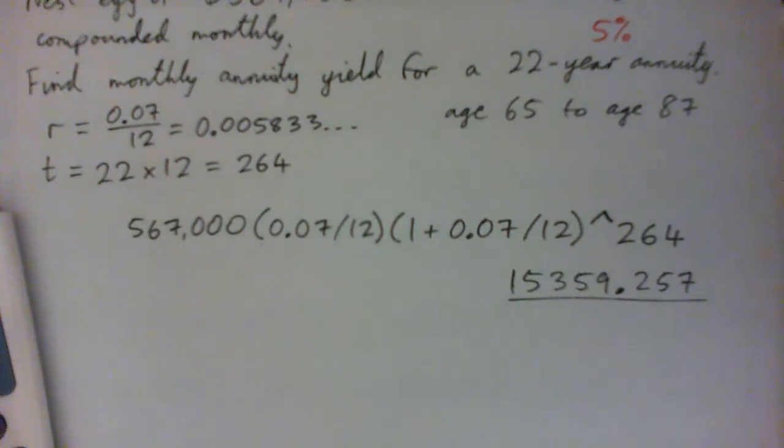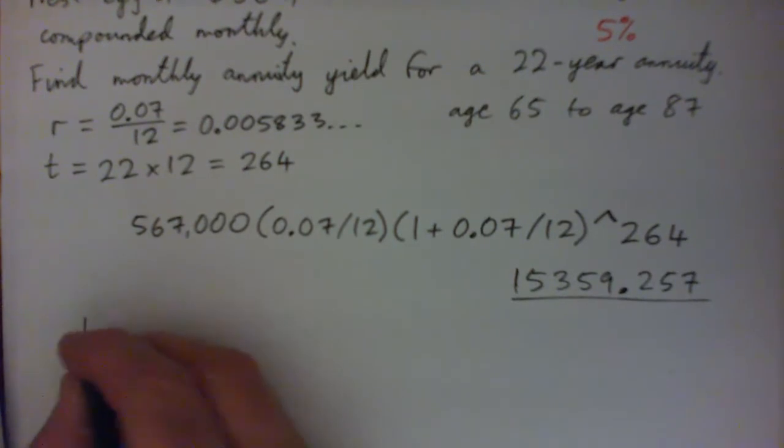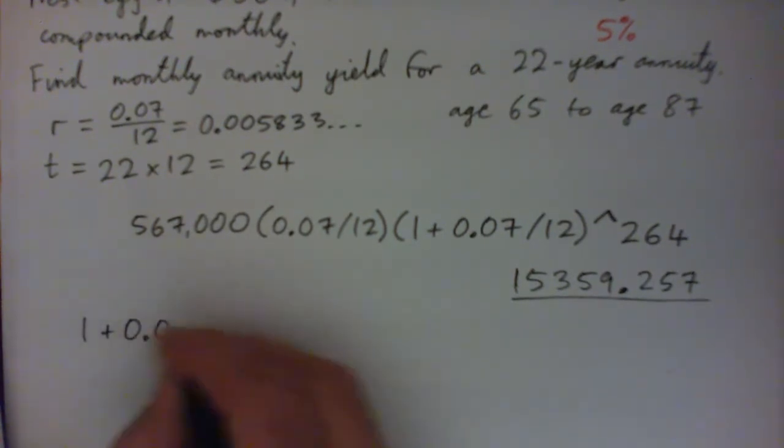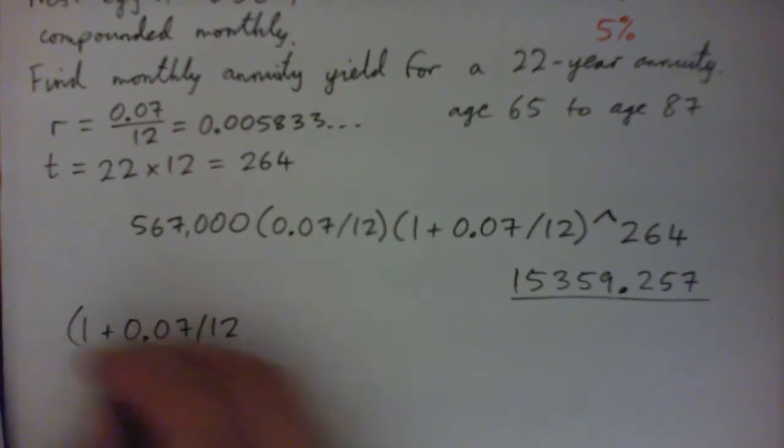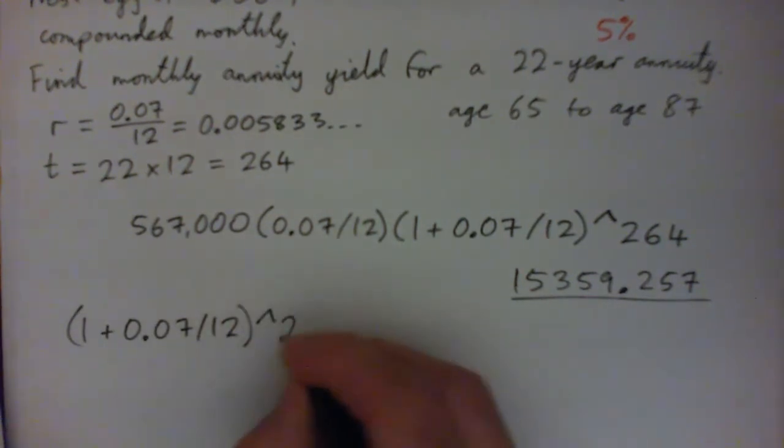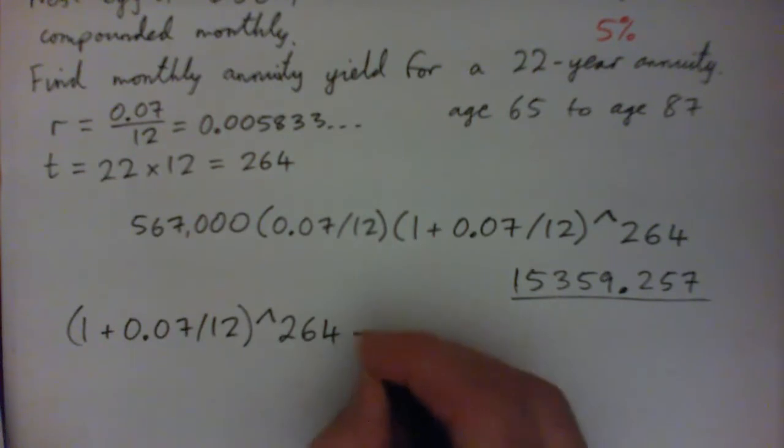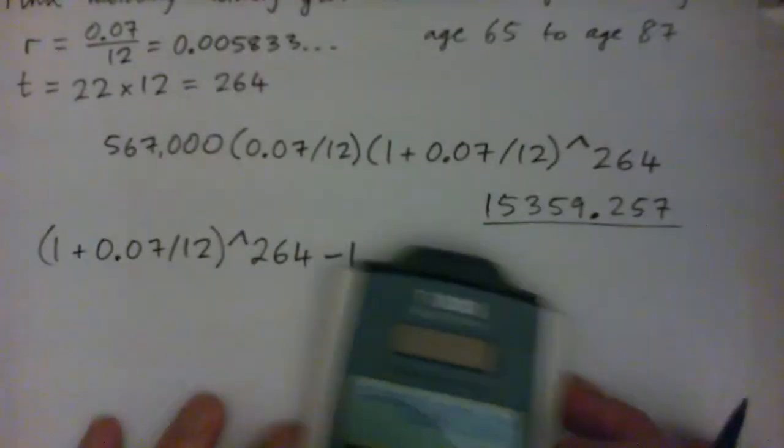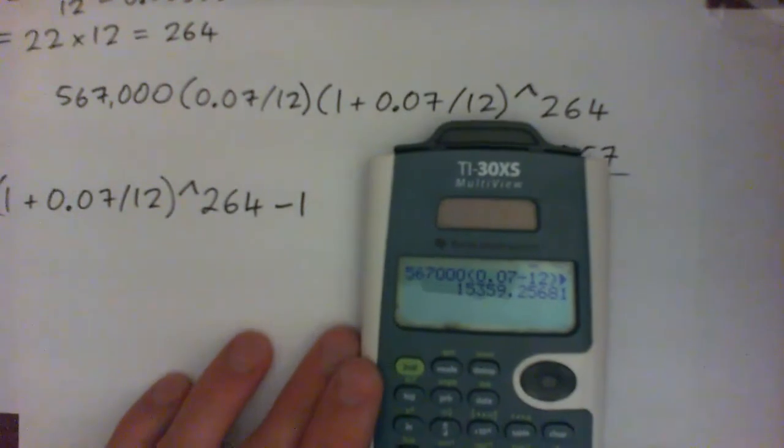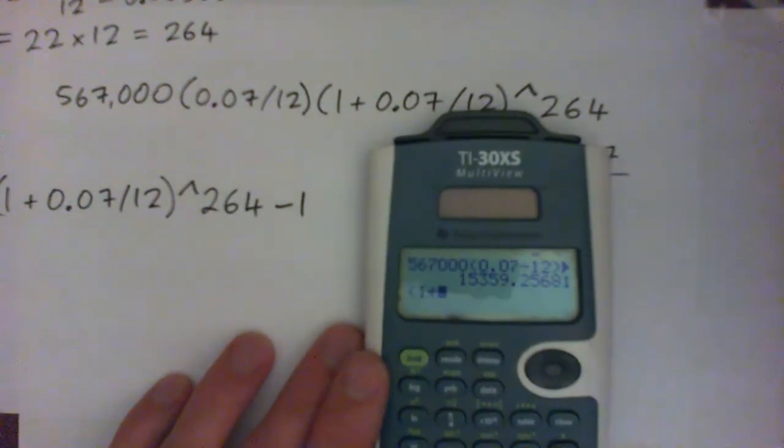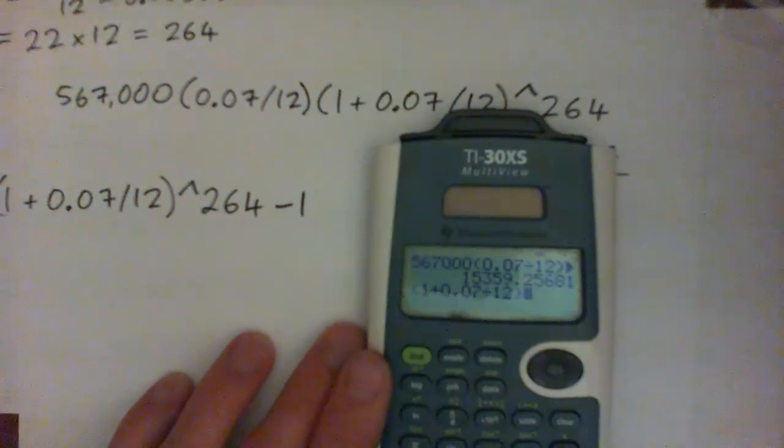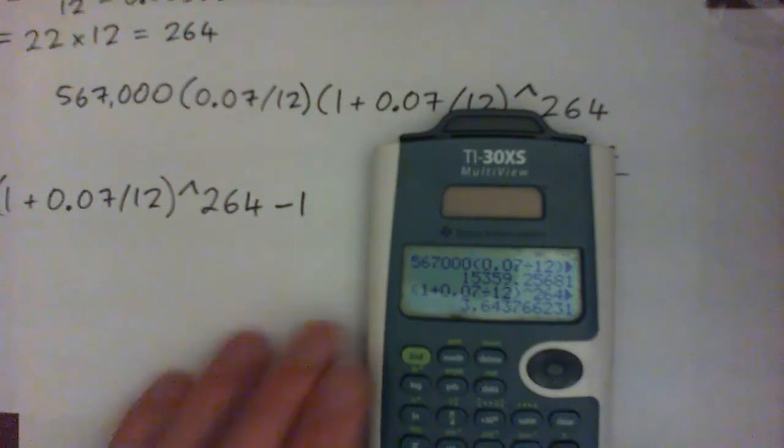And now I'll do the bottom of the fraction, which is 1 plus r to the power of t minus 1. So I'm going to go 1 plus 0.07 over 12. That's 1 plus r. Put that to the power of t, to the power of 264. And then subtract 1. And that would be the bottom. So let's do that. 1 plus 0.07 over 12 to the power of 264. And then subtract 1. And I get 3 point, all this stuff, right?